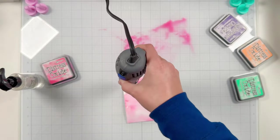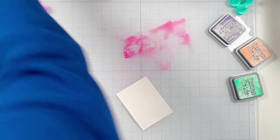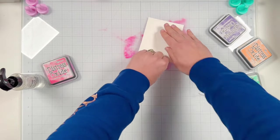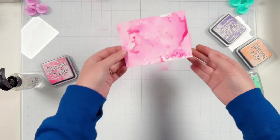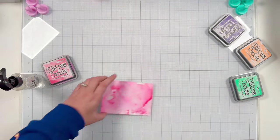Between different layers of ink I will use my heat gun on the lower setting to dry my cardstock so I can layer the inks on top of each other. That's one of the great things about distress oxides is that you can layer them in not only the same color but other colors as well.